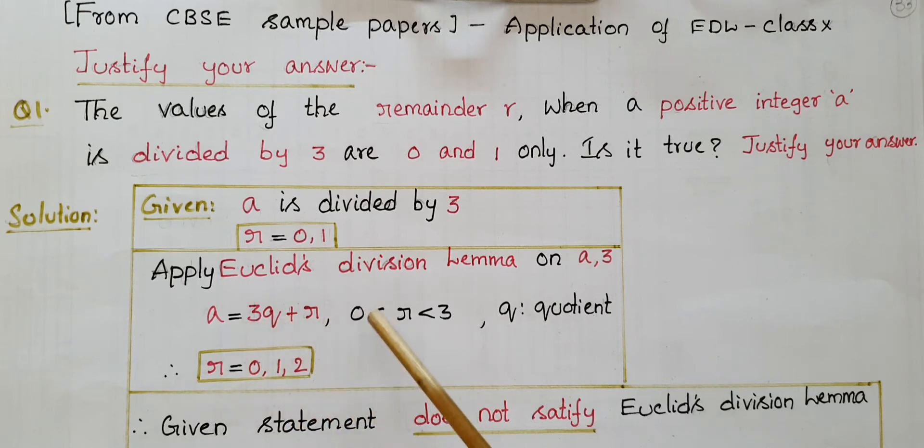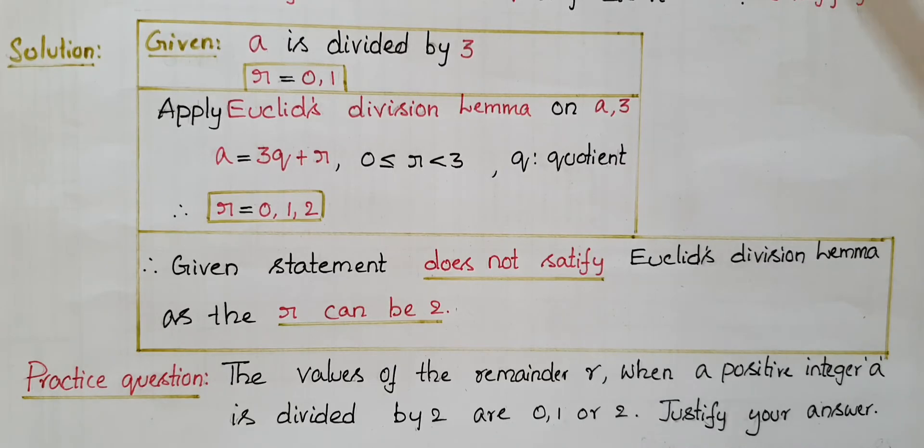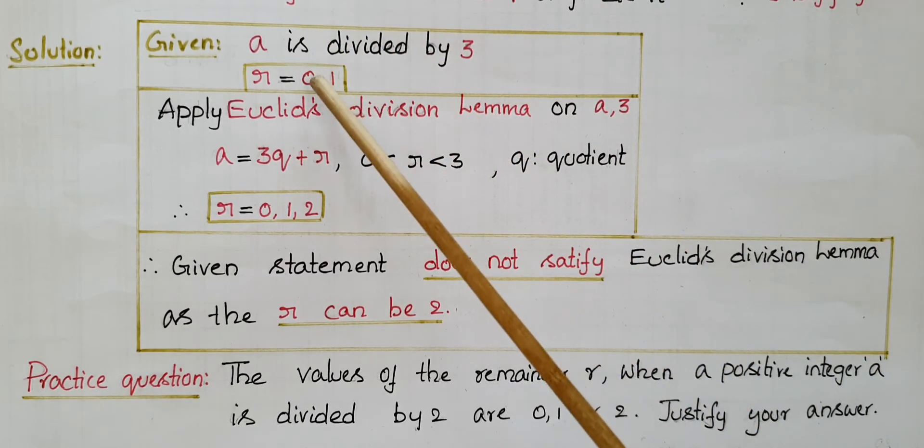0 is less than or equal to r is less than 3, where q is quotient. Therefore r equals 0 comma 1 comma 2. But here the r values are given as 0 and 1.